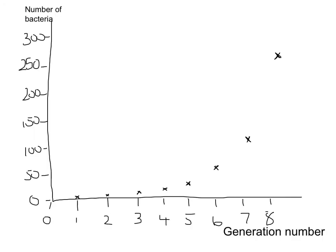Plotting this on a graph, we start with quite low numbers, but as the bacteria multiply we get a curve that steepens dramatically — this is called an exponential growth curve. As the first few generations divide, we get a steep increase in later generations, and that only gets bigger. This is where it can cause problems when we get disease.